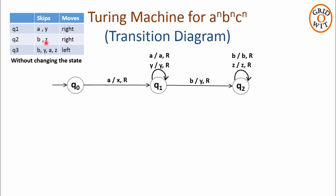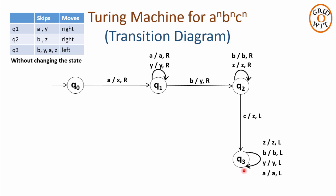You can check from the table that q2 will skip all b's and all z's. As soon as q2 reads the symbol c, it will replace it with z, takes a left move, and changes its state to q3. q3 will skip all z's, b's, y's, and a's while moving towards the left without changing state. As soon as q3 reaches the symbol x, the Turing machine realizes it has moved one step extra, so q3 on reading x will take a right move and change its state to q0.